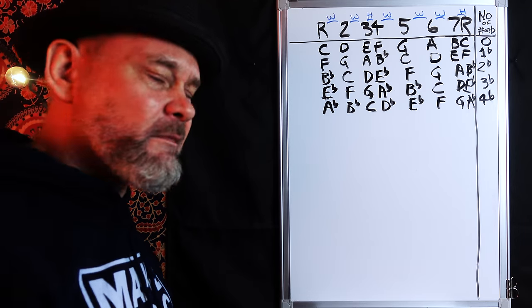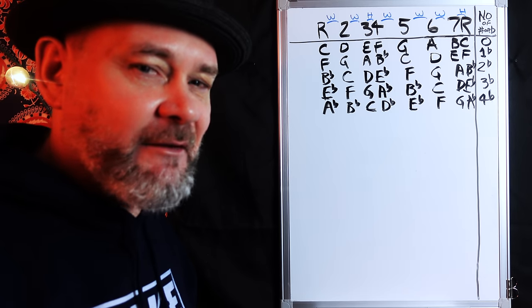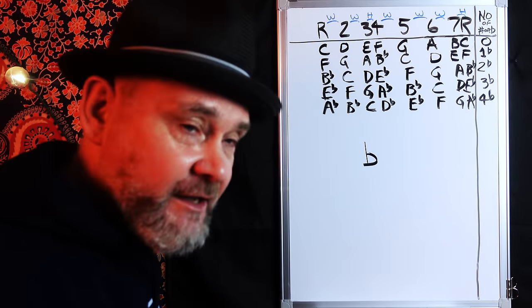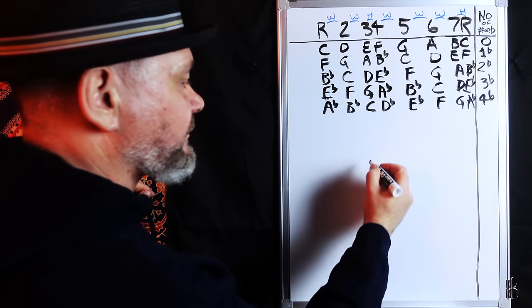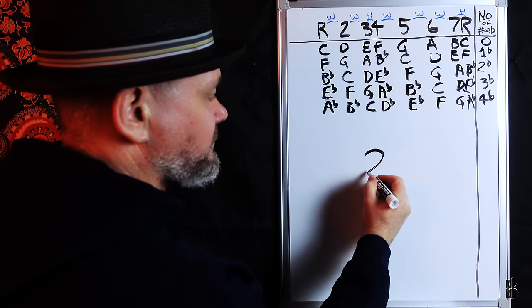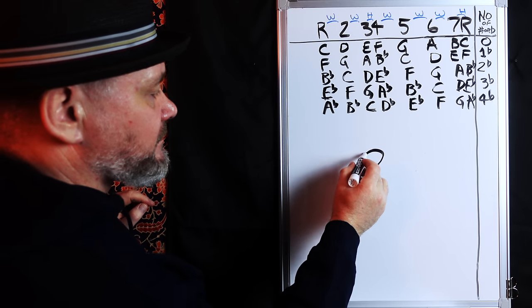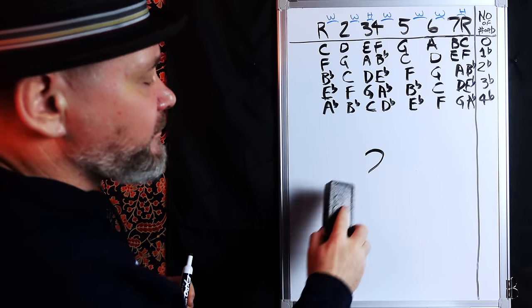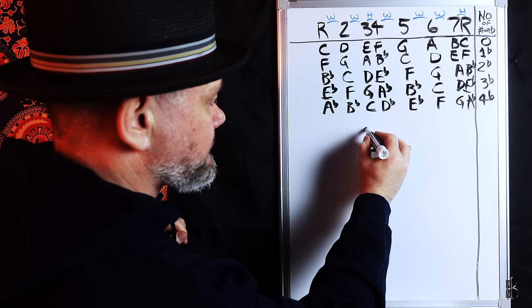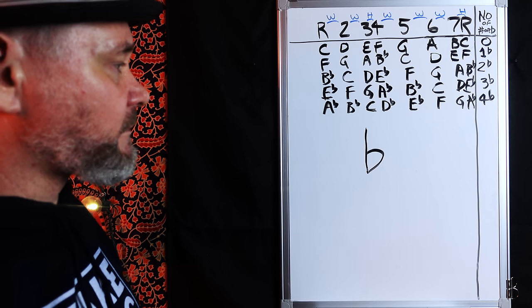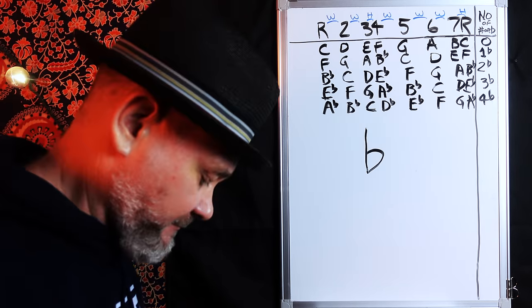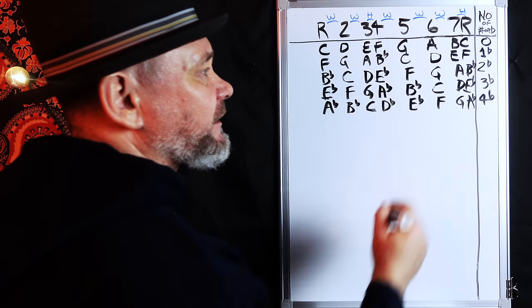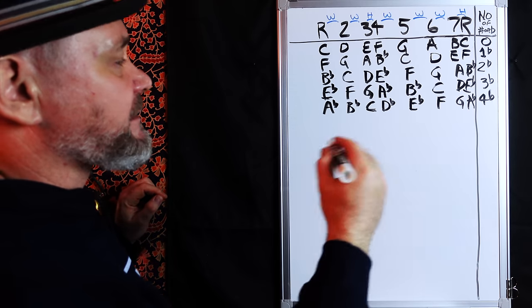By the way, do you know how to write a flat — a proper flat? This is how you write a proper flat. A proper flat does not look like a lowercase b. Think of it like this: you have this half of a heart shape, and then a straight line down the middle. That is what a flat is — just so you know how to create an actual real-looking flat.